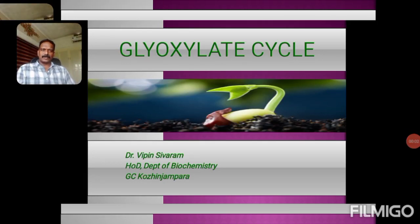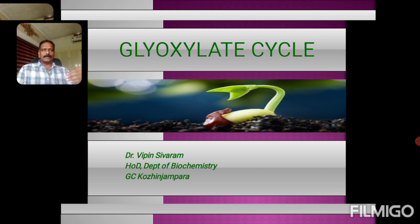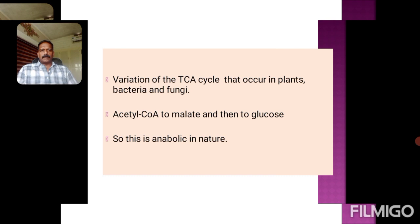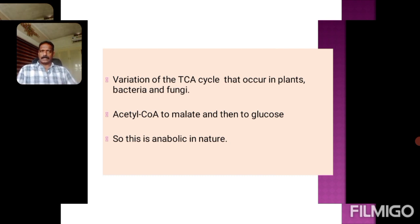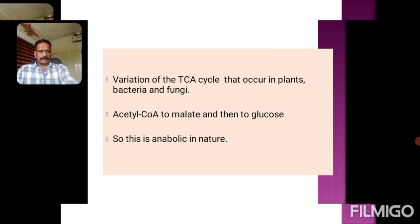Welcome to Vibs Biochemistry. We will be discussing the glyoxylate cycle, which is a variation of the TCA cycle or citric acid cycle. It primarily occurs in plants, some microorganisms, and nematodes. In these organisms, acetyl-CoA is converted to malate, which gets converted to oxaloacetate — a substrate for gluconeogenesis. So malate can be used for the synthesis of glucose through oxaloacetate, making the glyoxylate cycle an anabolic metabolic process.